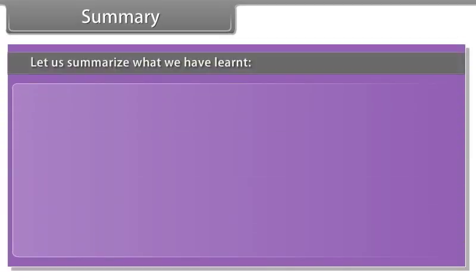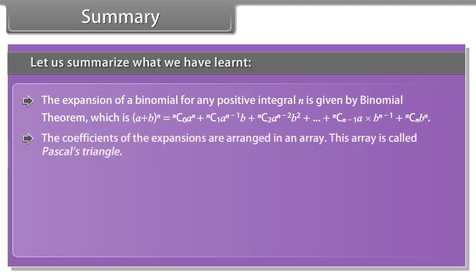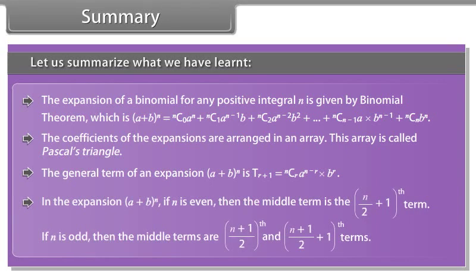Let us summarize what we have learned. The expansion of a binomial for any positive integral n is given by the binomial theorem. The coefficients of the expansions are arranged in an array called Pascal's triangle. In the expansion of a plus b raised to power n: if n is even, then the middle term is the (n/2 + 1)th term; if n is odd, then the middle terms are the (n+1)/2 th and (n+1)/2 + 1 th terms.